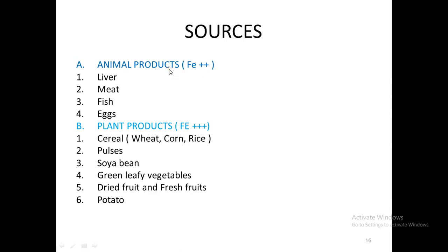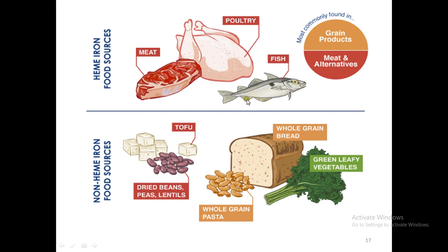Iron sources in our diet are of two main types: animal products and plant products. Animal products contain iron in the ferrous form — the divalent cation — and these are the best sources of iron because they are very well absorbed by the GIT. These are found in liver, meat, fish, eggs, etc. Plant products also contain iron, but here it is in the ferric form — trivalent iron — which is not so well absorbed by the human body unless converted to the ferrous form first inside the GIT.